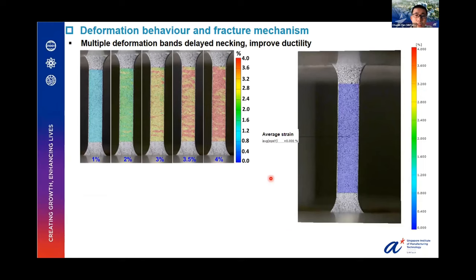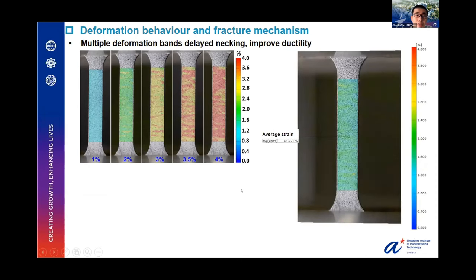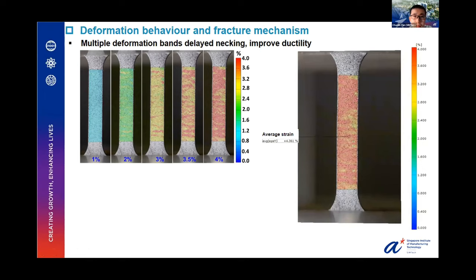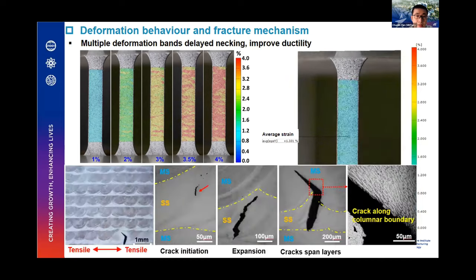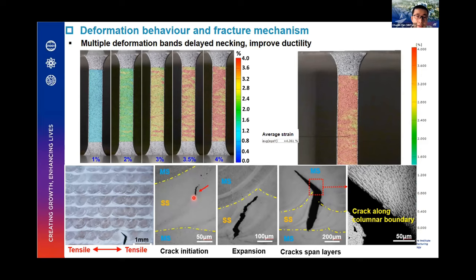The deformation behavior was in-situ monitored by digital image correlation (DIC). During the tensile test, many deformation bands are observed in this material — unlike in a uniform material. These multiple deformation bands delay necking and improve ductility. Investigation of the fracture mechanism shows cracks initiate in the SS region due to its lower strength, then propagate across the MS and jump the interface. Interestingly, when the crack enters the other material, its direction changes slightly due to the boundary.